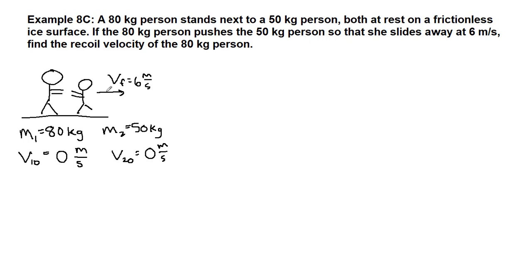Based on where I drew these people, this is going to be pointing to the right. So V final is positive 6 meters per second. And we're asking to find the recoil velocity of the 80 kilogram person.